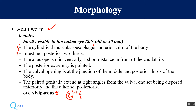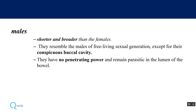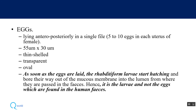Male worms, as is typical in nematodes, are shorter but broader than female worms. They have a conspicuous buccal cavity and do not have any tissue penetration power, so they remain inside the lumen of the small intestine. The eggs are thin-shelled, transparent, and oval, but they cannot usually be seen.